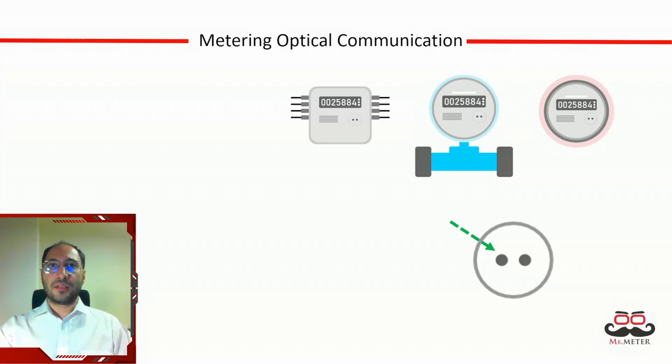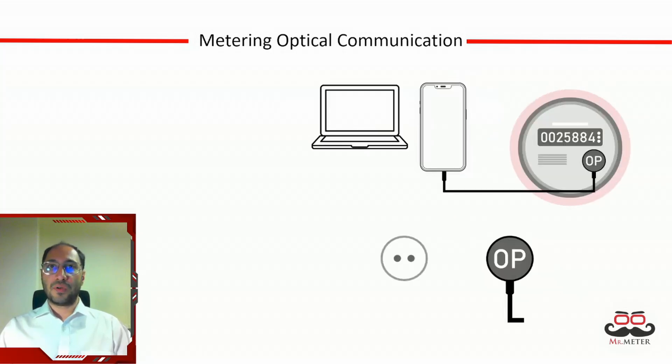One LED typically acts as a light emitter sending signals to the external device, while the other one acts as a receiver collecting signals from the external device. This bi-directional communication is essential for tasks like reading meter data, configuring the meter, or updating its firmware. The use of these two LEDs facilitates a form of serial communication based on IEC 62056-21 standards.